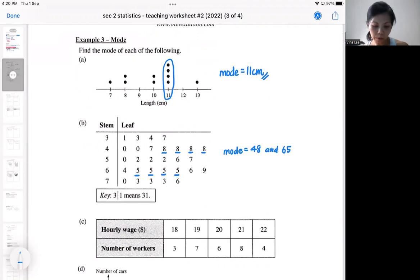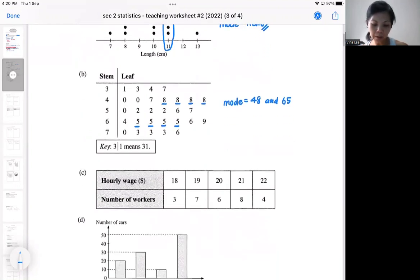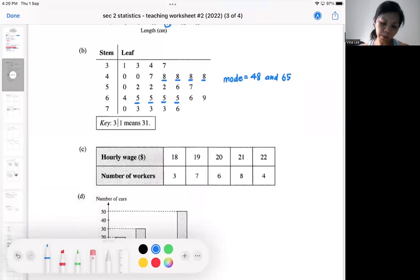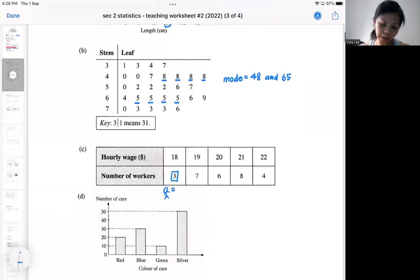Then if you go to part C, that is a table, that's a frequency table. So interpret the table first. We'll interpret the table in this way. There are three workers, and these three workers earn $18 per hour. Here we got seven workers, and each of the seven workers earn $19 per hour. These are the number of workers and what is the hourly wage.